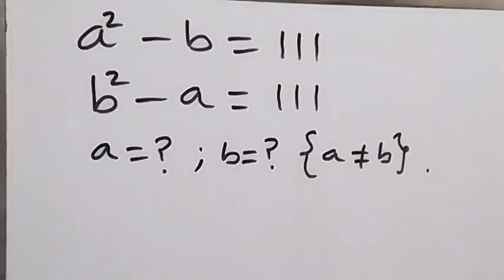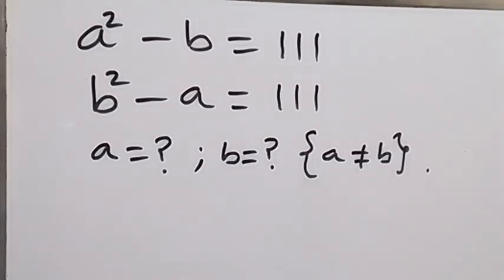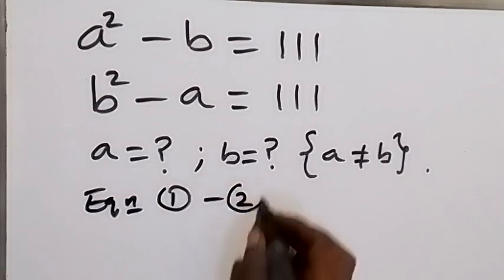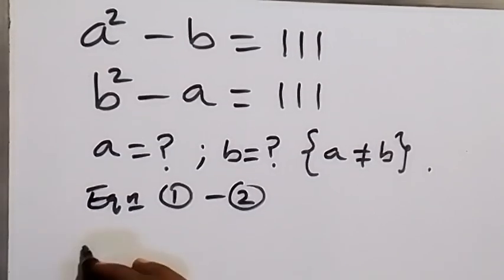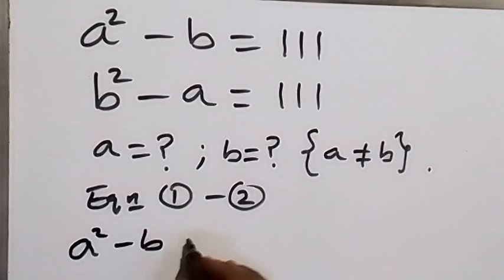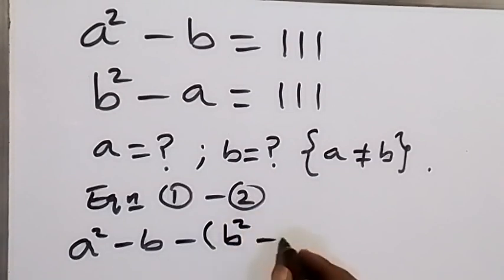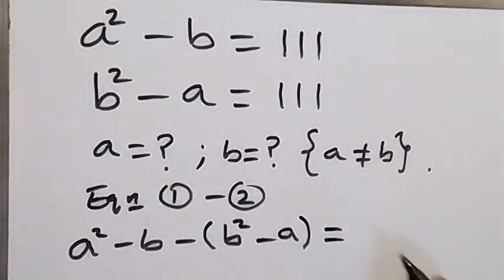Hello, you are welcome. Here we are solving a nice olympiad problem, finding the values of a and b where a is not equal to b. Let's subtract equation 2 from equation 1. On the left-hand side we have equation 1: a² minus b, then minus equation 2: minus (b² minus a), and on the right-hand side we subtract 1 minus 1, which gives us zero.